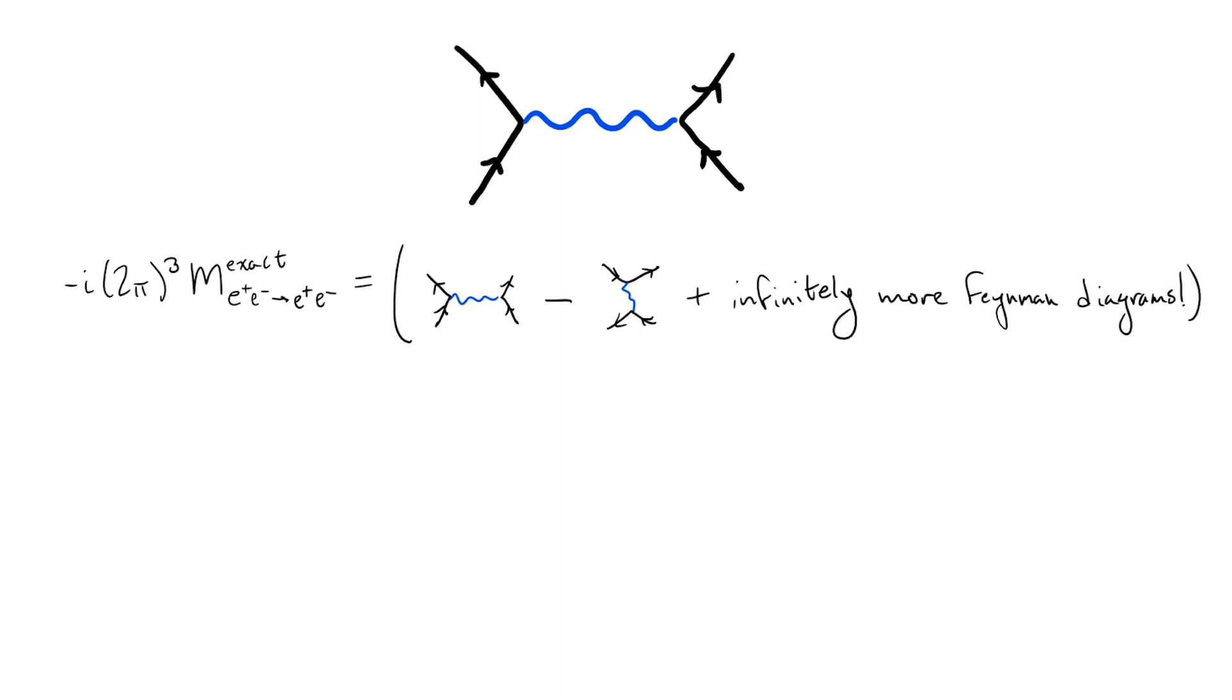Even more so, since we have to add all of these Feynman diagrams up to get a total amplitude, to say any one process is happening over any other is a big quantum mechanical no-no.